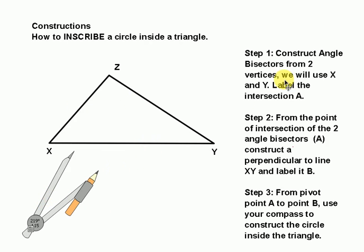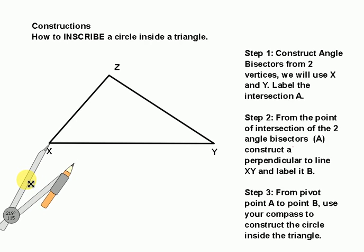So now, the first step we're going to do, and I've listed the steps here for you, is we are going to construct the angle bisectors from two of the vertices. And I'll go ahead and use vertice X and the vertice at angle Y.